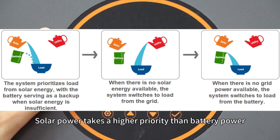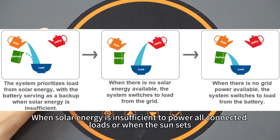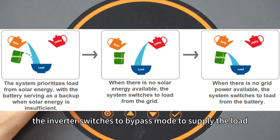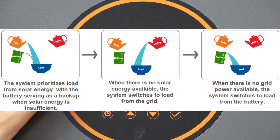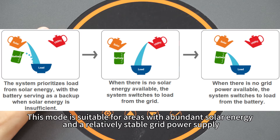Solar power takes a higher priority than battery power. When solar energy is insufficient to power all connected loads, the inverter switches to bypass mode to supply the load from the grid. This mode is suitable for areas with abundant solar energy and a relatively stable grid power supply.